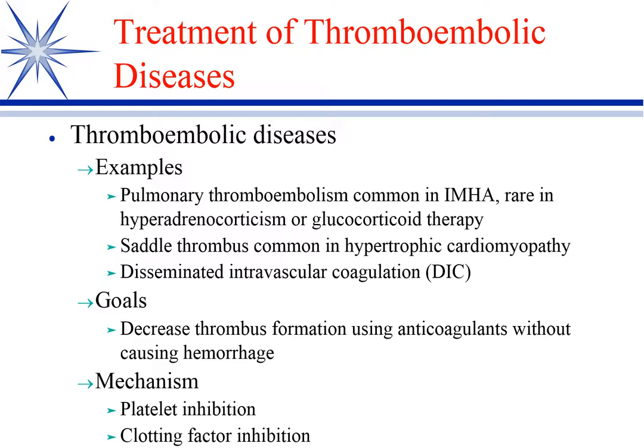The bad thing is that because it's an immune-mediated disease, we have to treat with a steroid, and steroids are pro-coagulatory. We know in Cushing's disease, one of the signs is sudden death from pulmonary thromboembolism because of the pro-coagulatory effect of steroids. So with IMHA we have a rock and a hard place — IMHA itself wants to cause a thrombus, then we add a steroid on top of that. So we oftentimes add anticoagulants when dealing with IMHA.